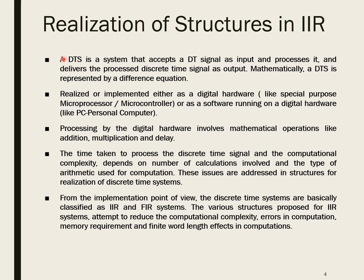What is a discrete time system? A discrete time system is one which accepts a discrete time signal as input, processes it, and delivers the processed discrete time signal as output. This is mathematically expressed using a difference equation. It can be realized as digital hardware using a microprocessor or microcontroller, or as software running on a digital hardware like a personal computer. Processing involves mathematical operations like addition, multiplication, and delay. The time taken and computational complexity depend on the number of calculations and the type of arithmetic used.